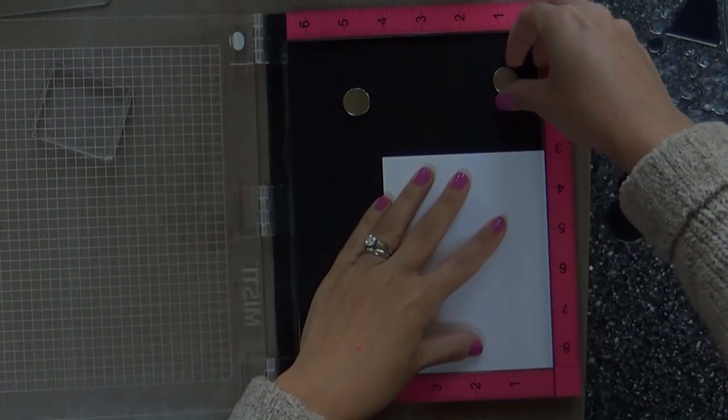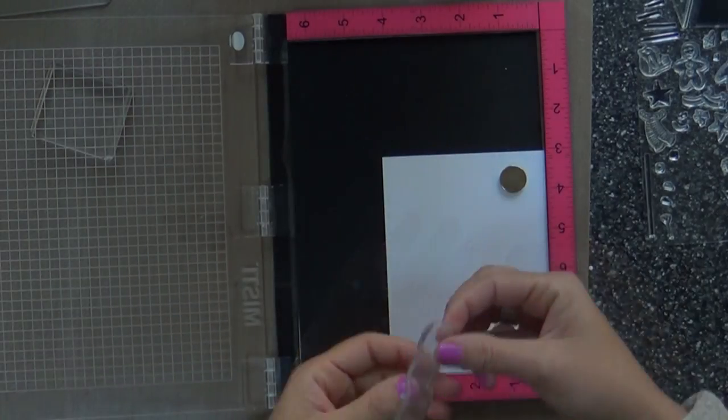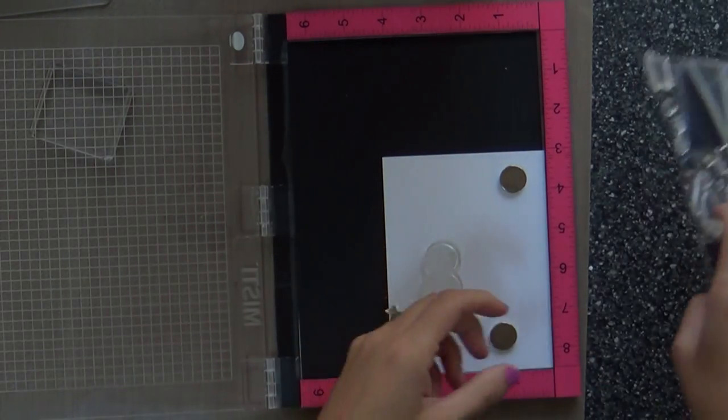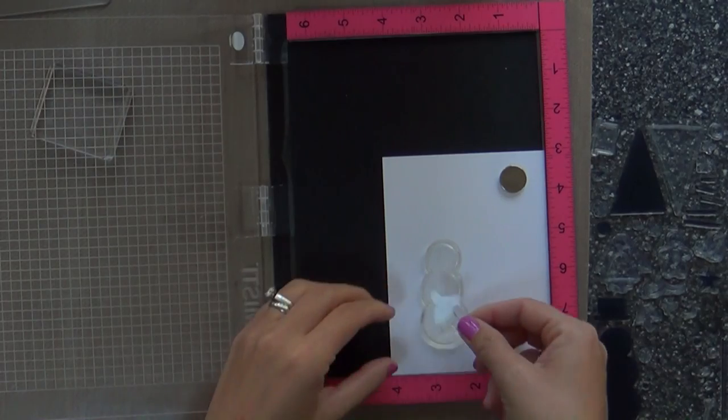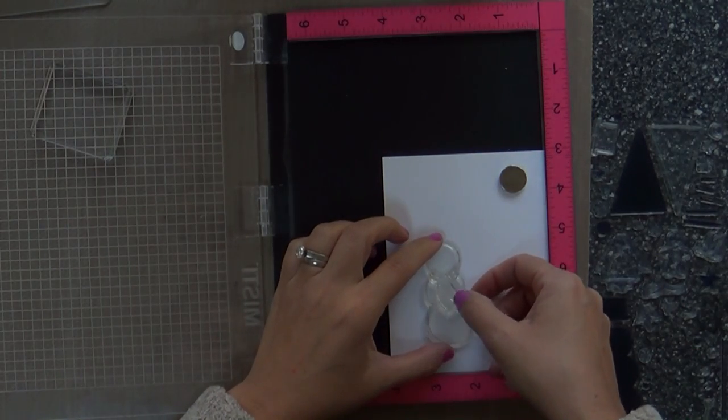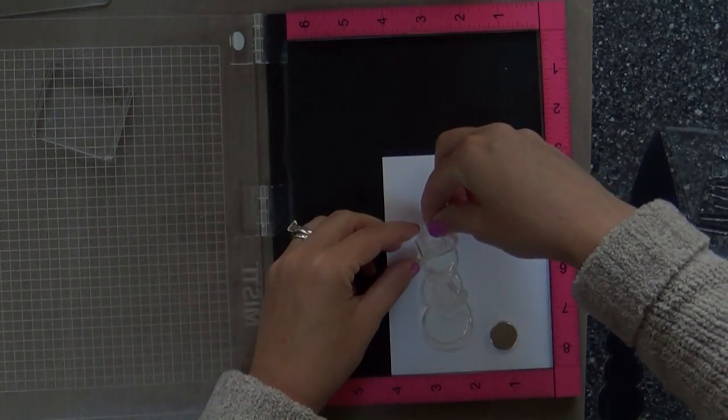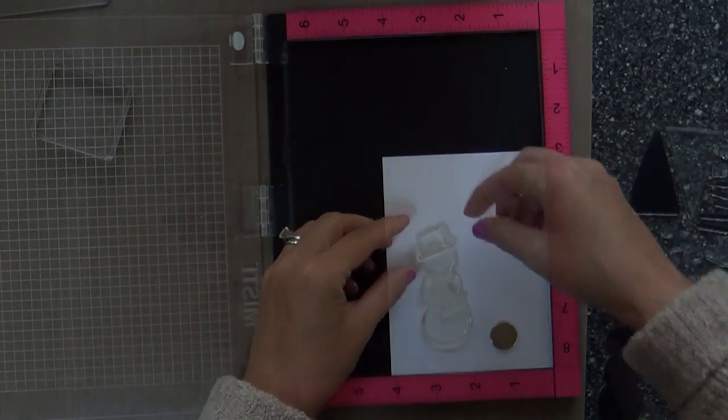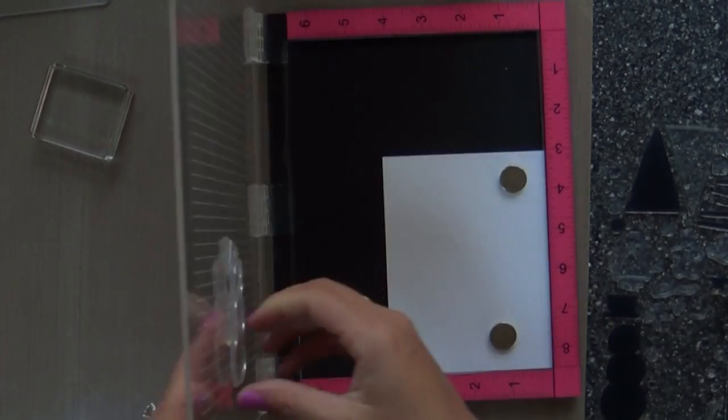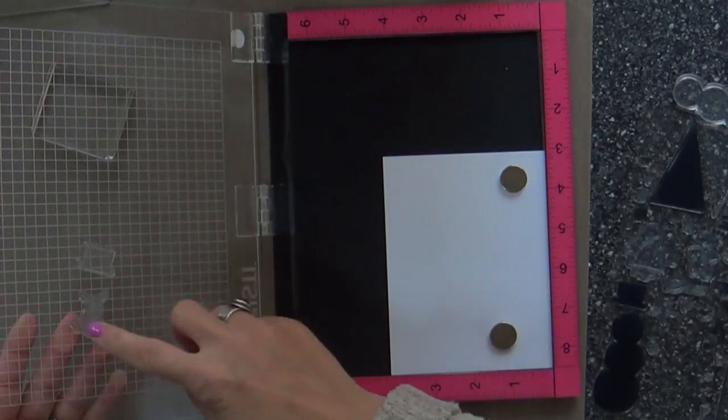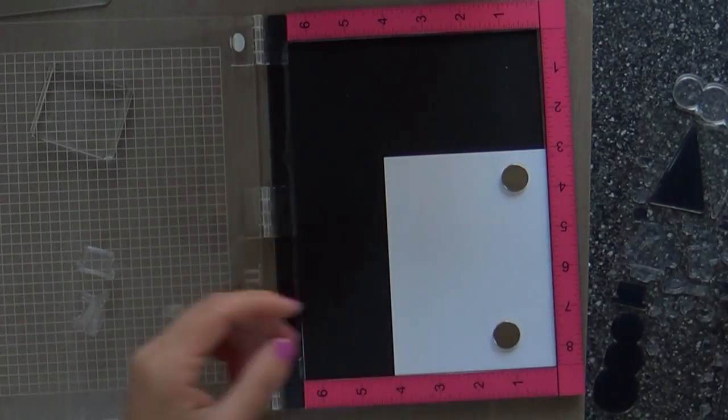This first one features the Christmas Critters stamp set as well as, well actually all three. There's three stamp sets in the holiday release - the Poinsettia, Christmas Critters, and Christmas Sentiment. So I'm starting with the Christmas Critters. It's got the snowman with all the accessories that you put on it. So there's no coordinating dies. So in order to get this all to work, to look like you've got the scarf and the hat on the snowman, you've got to do a little masking.